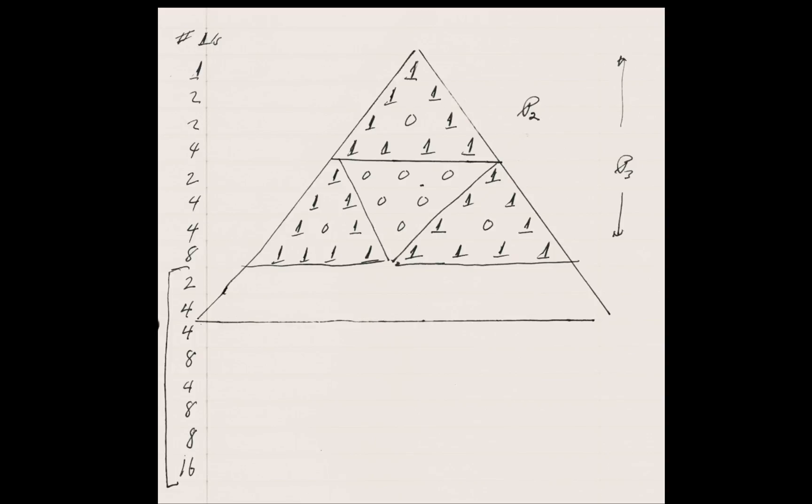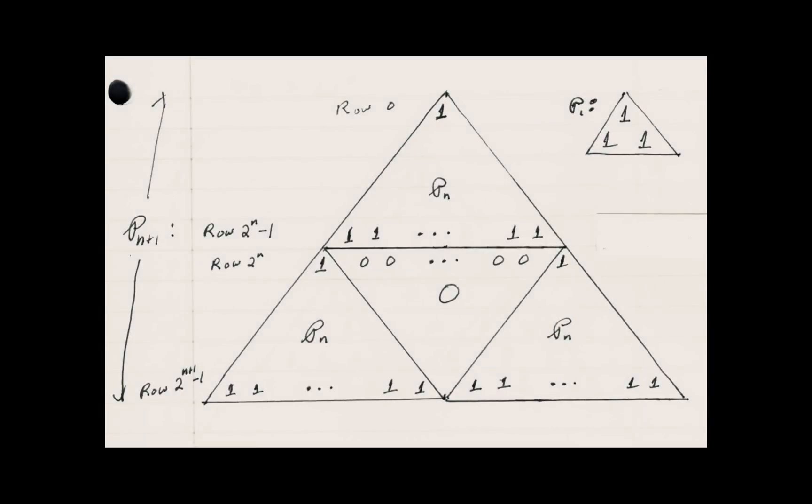Once you have that, you can also infer from that that the row immediately above is all ones.